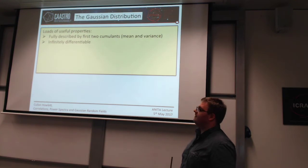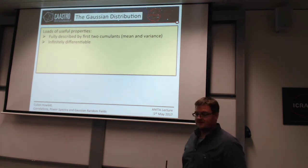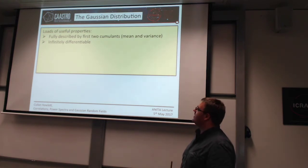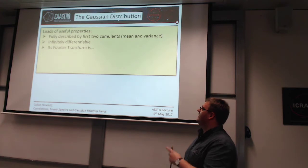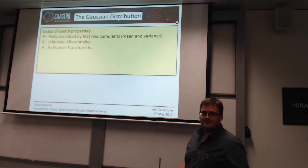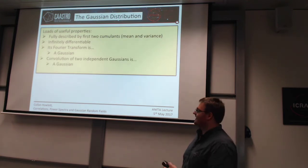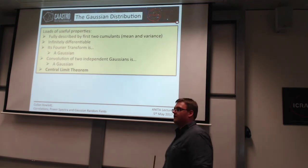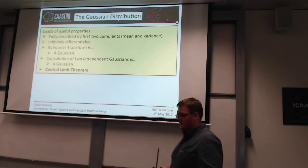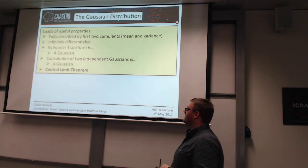It's infinitely differentiable, which means it has a smoothness of two. It has a very nice Fourier transform — does anyone know what that is? It is a Gaussian. Also, if you take two independent Gaussians and convolve them, what do you get? Gaussians. And what makes this really interesting, especially in cosmology and astronomy, is the central limit theorem, which says that if you take a bunch of independent random variables with some finite expectation of variance and add them, the sum tends towards a normal distribution — and that's independent of the original variable distributions.